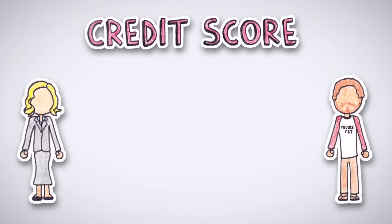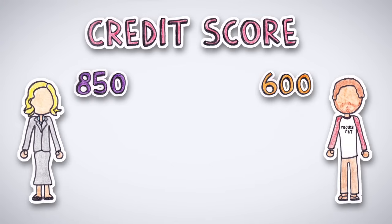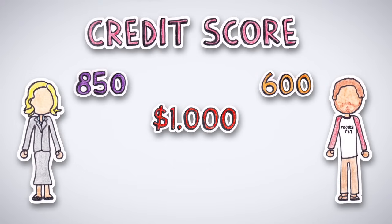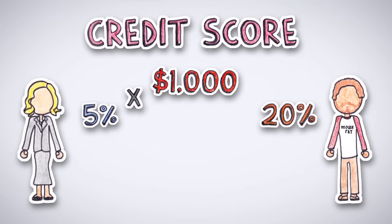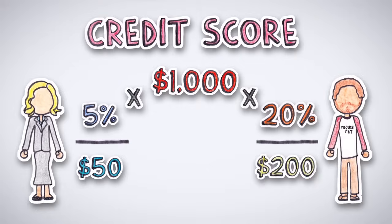For example, given their spending habits, Leslie's credit score would be closer to 850, while Andy's would be closer to 600. If they both need to borrow $1,000, Leslie's interest rate would be closer to 5%, while Andy's could be as high as 20%. So while Leslie's monthly interest payments would be $50, Andy's would be $200.